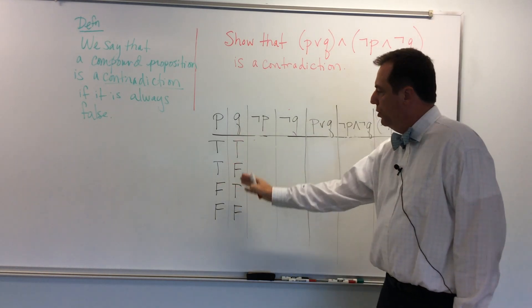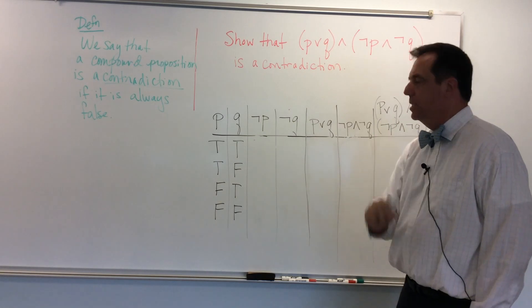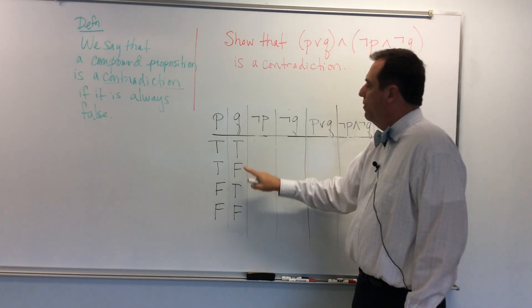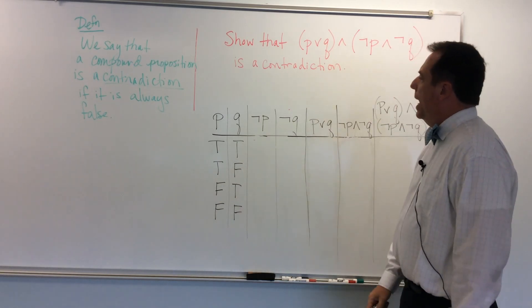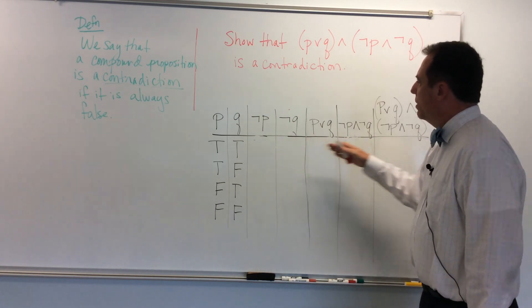Now I've got two trues, two falses. Difficult to say, but I got it right that time. True, false, true, false. And now all I have to do is fill in the rest of the table.